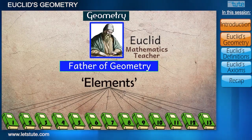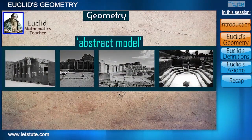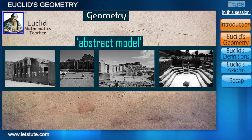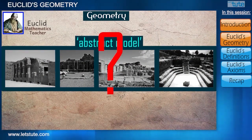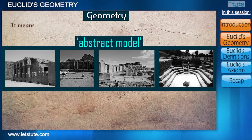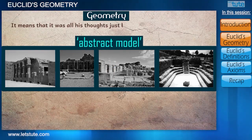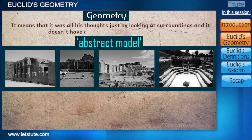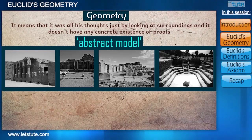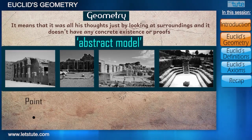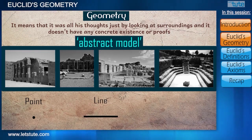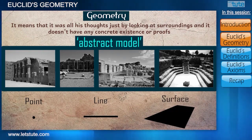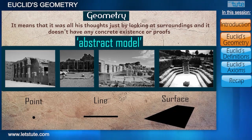Euclid's approach towards geometry was an abstract model of the surroundings of that time. You may wonder what an abstract model is — it means it was all his thoughts, just by looking at the surroundings, and it does not have any concrete existence or proofs. What is a point, a line, a surface, and various other things were derived just by looking at what's present in the world.